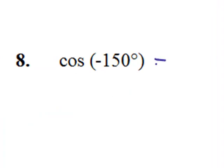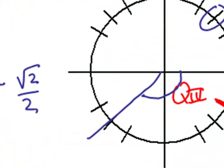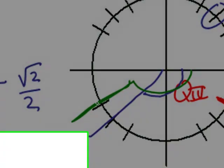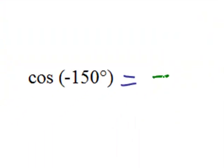Cosine of negative 150 degrees. Negative 150 degrees. That is not quite 180 degrees. So it's going to be right over here, also in quadrant 3. And the cosine in quadrant 3 is negative.